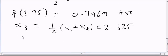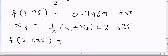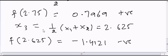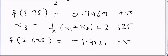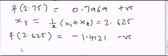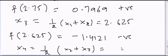Now f(2.625) = -1.4121, which is a negative number. So my answer will be most closely x4 = (x2 + x3)/2 = 2.6875.